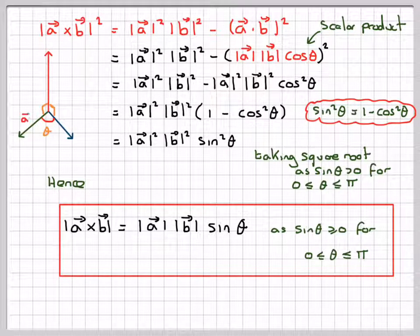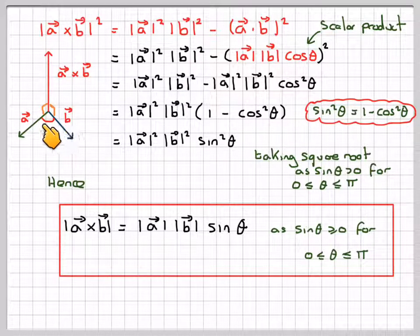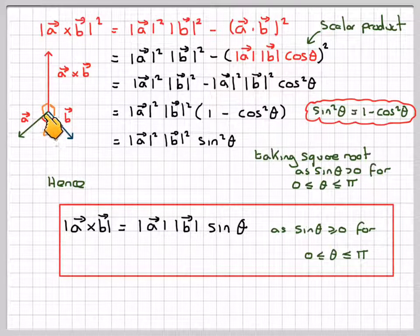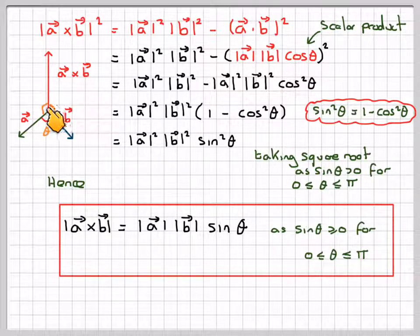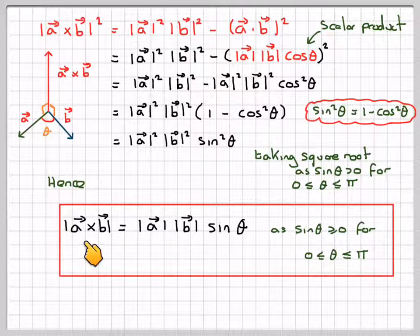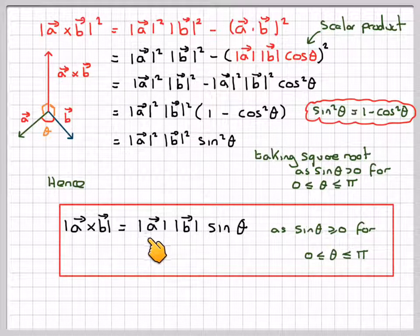If we draw a little diagram: vector A and vector B with the angle theta between them — the greatest this angle could ever be is pi. Sine is always positive for theta in (0, pi), and the cross product is a vector perpendicular to both A and B. Hence we've proved that the magnitude of the cross product equals the magnitude of A times the magnitude of B times sinθ.